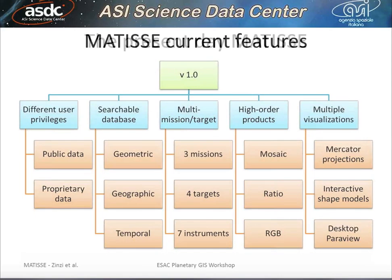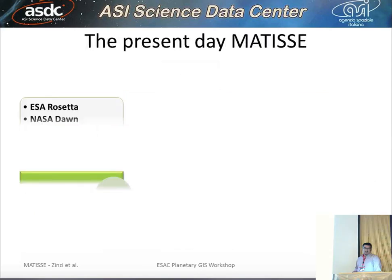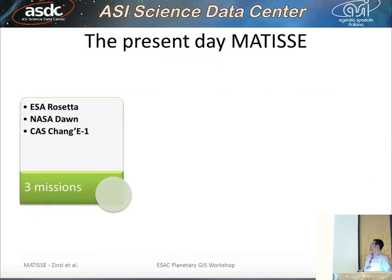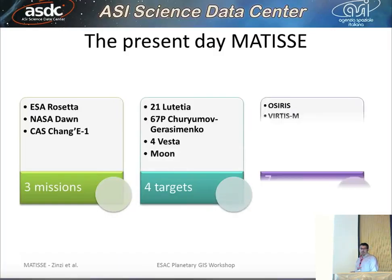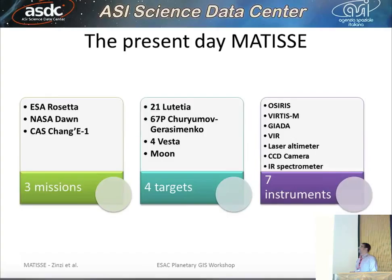At the present day, Matisse has three missions: Rosetta, Dawn, and Chang'e-1, the first Chinese probe to the Moon. It covers four targets — Lutetia, Churyumov-Gerasimenko, Vesta, and the Moon — and seven instruments from the missions described.